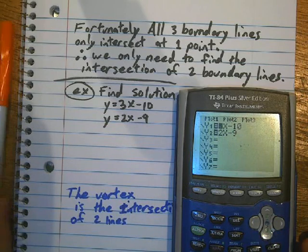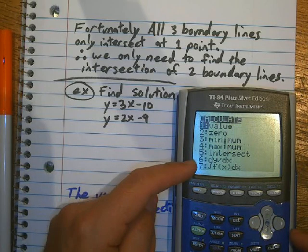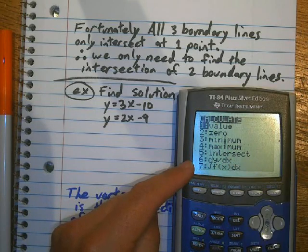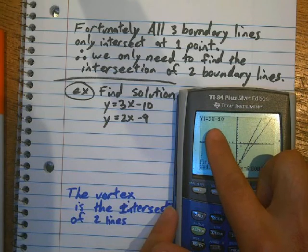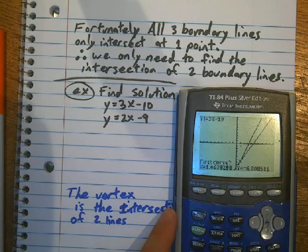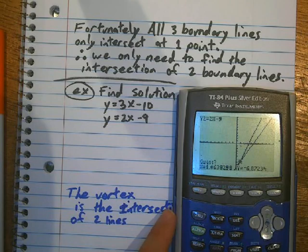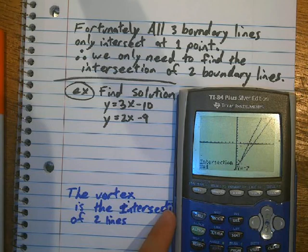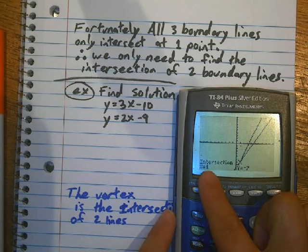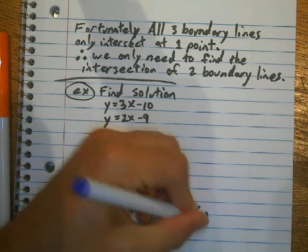Now, to get the intersection, I hit second trace in order to get here. And to find an intersection, I'm going to hit 5 for intersect. And then it says first curve, and it's got the first equation, 3x minus 10. I hit enter. Then it says second curve, and it says 2x minus 9. I hit enter. Then it says guess. I never know why it says guess, but you hit enter again. And then it calculates that my intersection is 1, negative 7. So, the vertex is going to be 1, negative 7.